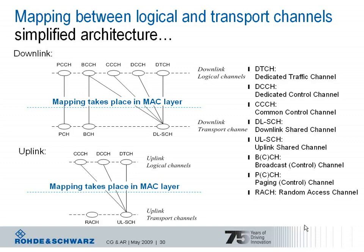One question about the downlink channel mapping slide: you explained that the broadcast control channel can be mapped to either the broadcast channel or the downlink shared channel — how should that be understood? The broadcast control channel can carry different types of information. The master information block is mapped onto the broadcast channel, which is then mapped onto the physical broadcast channel, while other types of system information are mapped onto the downlink shared channel.